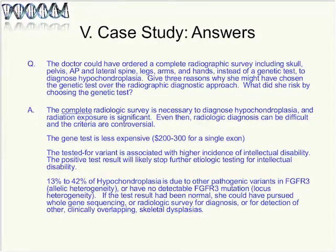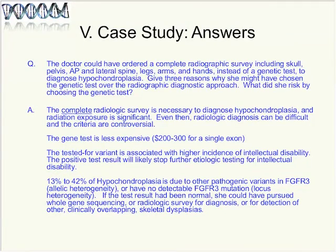Why did the doctor choose a genetic test rather than a complete radiographic survey? The complete radiologic survey requires significant radiation exposure, can be diagnostically difficult depending on radiologist experience, and the gene test is less expensive — about $200 to $300 for a single exon. Additionally, the specific tested variant is associated with intellectual disability, so finding it explains both Roger's skeletal dysplasia and his intellectual disability without needing further investigation.